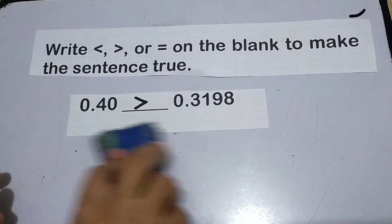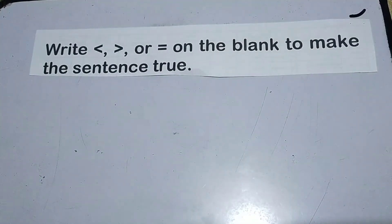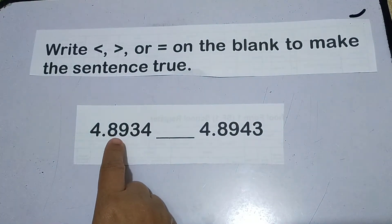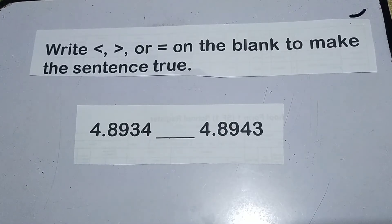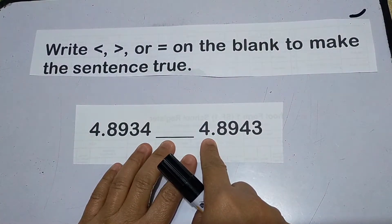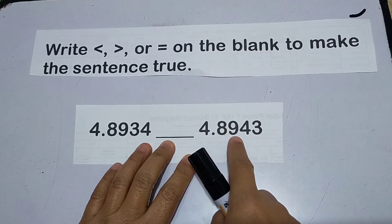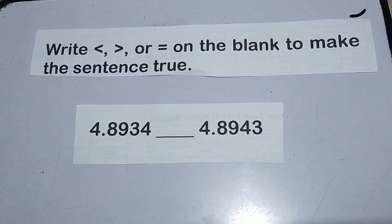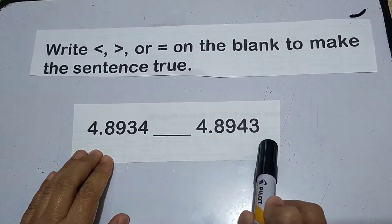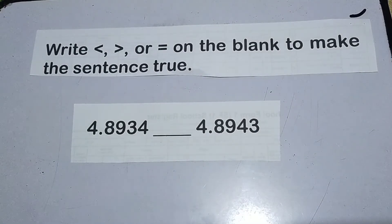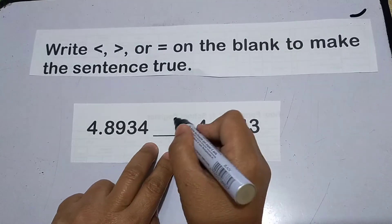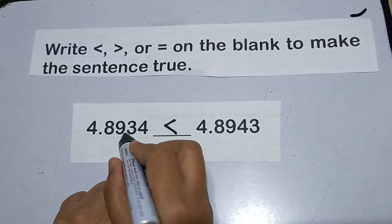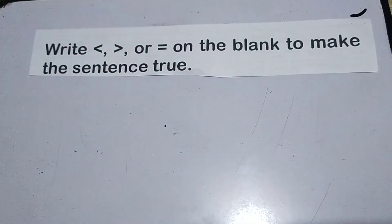Alright, another example. So this one. 4.8934 ten thousandths compares to 4.8943 ten thousandths. Madaling ma-distinguish no? Kasi equal yung dami ng digits nila. Alam mo na kagad kung ano yung mas malaki dyan. Then the answer is less than. Mas malaki ito kesa dito.